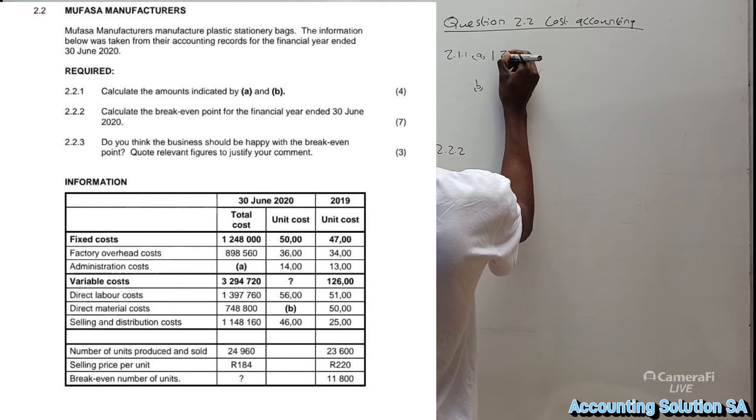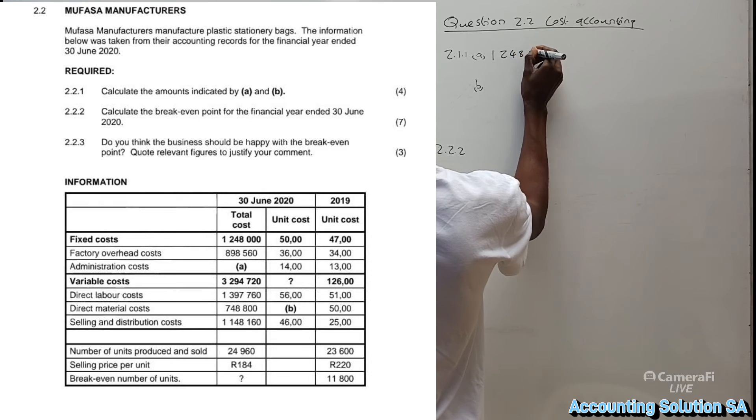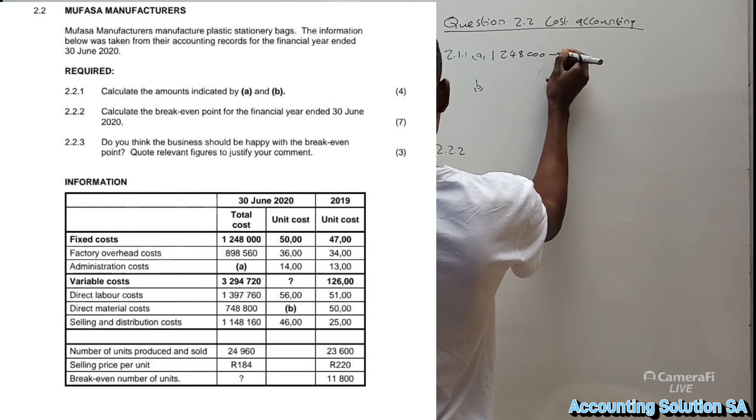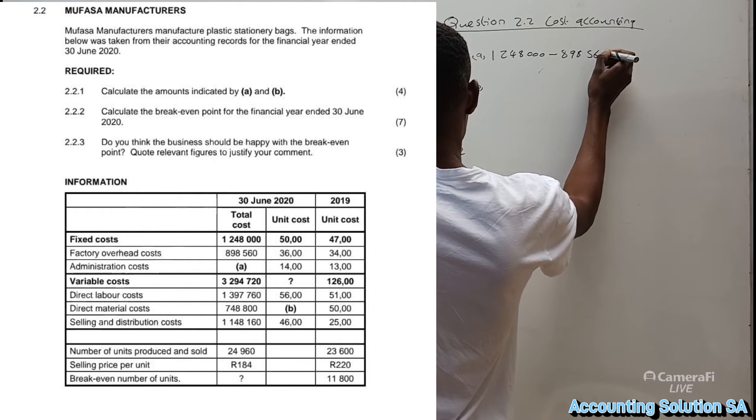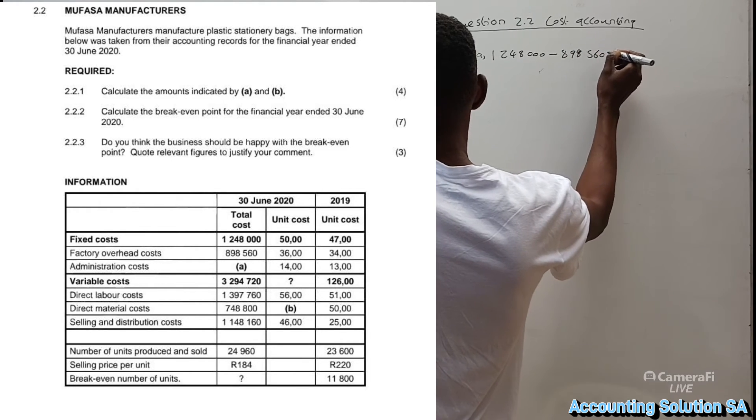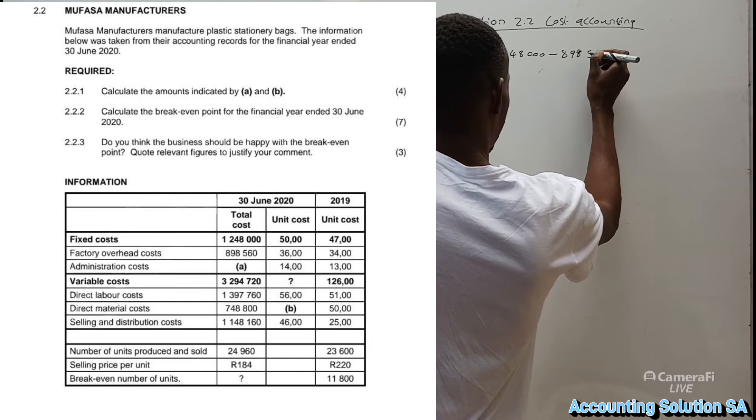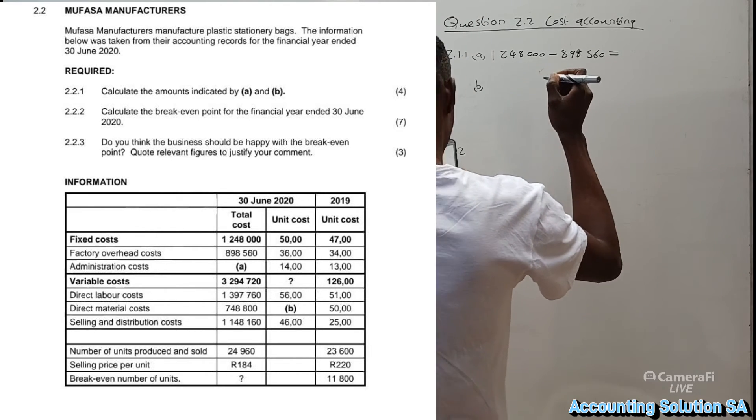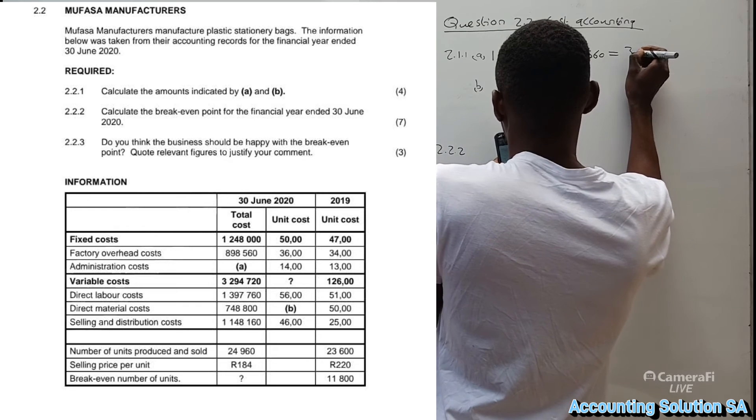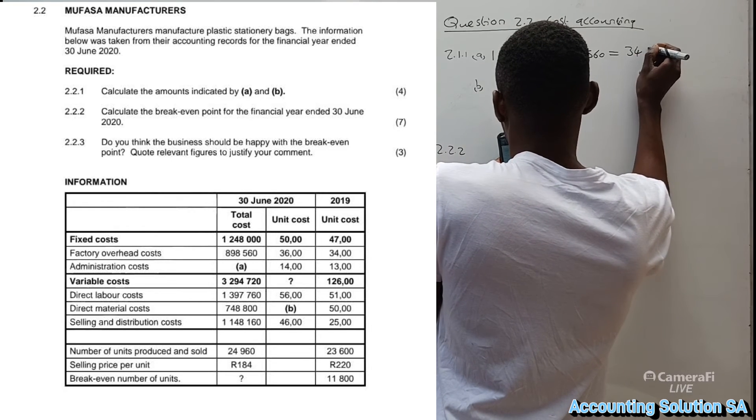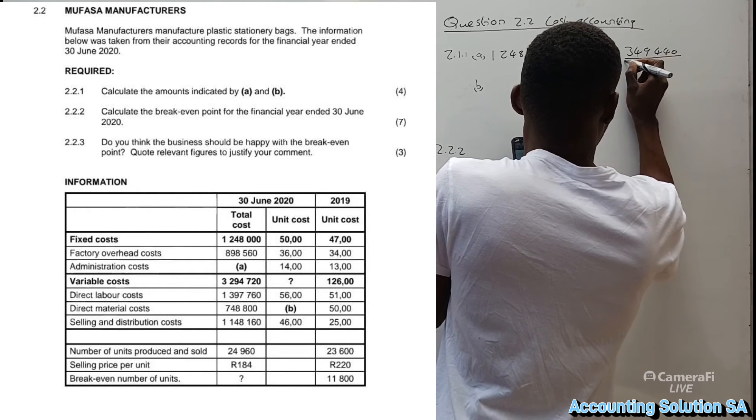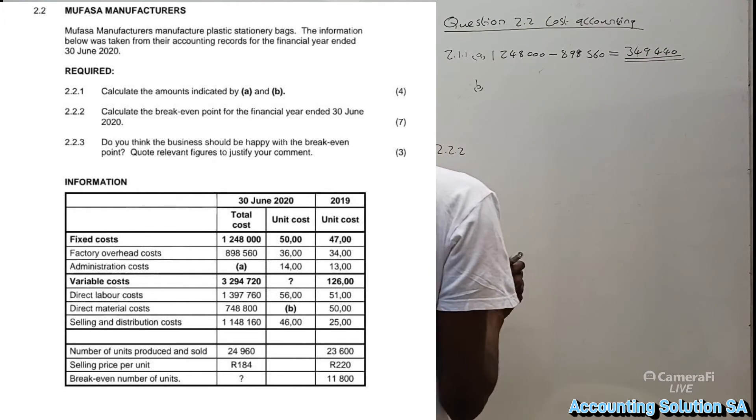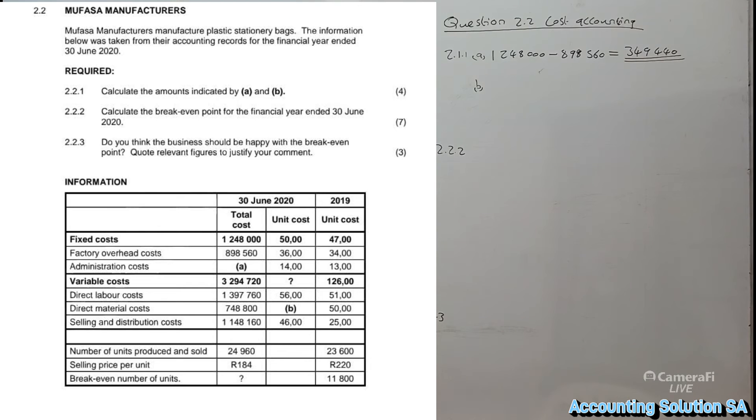We're going to take our total of 1,248,000 and subtract 898,560. Then after that you will subtract and you will get an amount of 349,440. Then you'll be done with question 2.2.1(a).